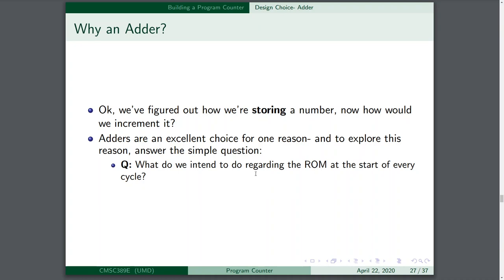For the program counter, you'll want to build a separate adder outside of the ALU construct. Don't double-use your ALU for the program counter — you'll find it gets a little messy. We don't want to clutter up the ALU. So build a separate adder for this.